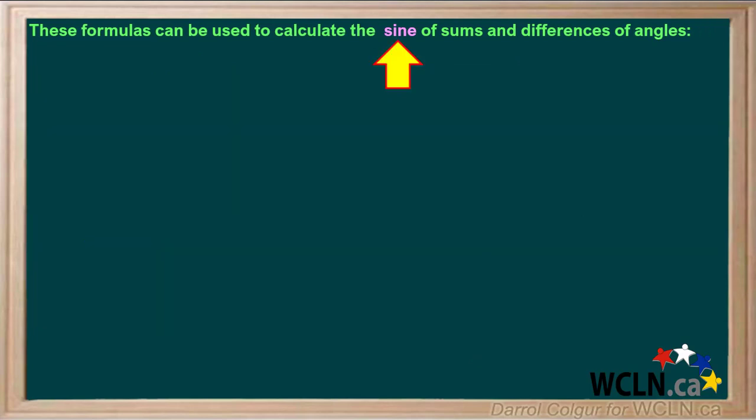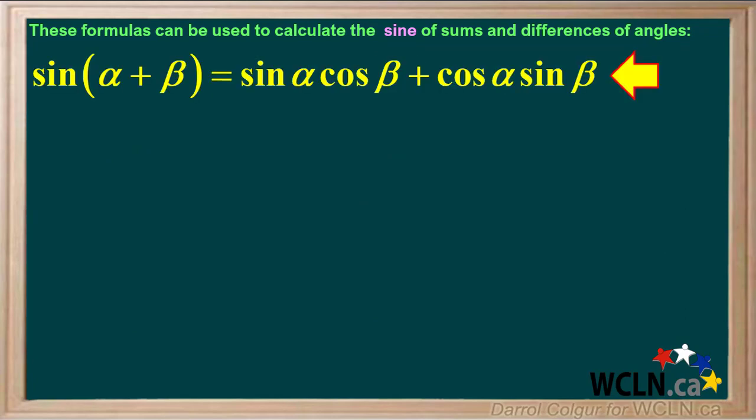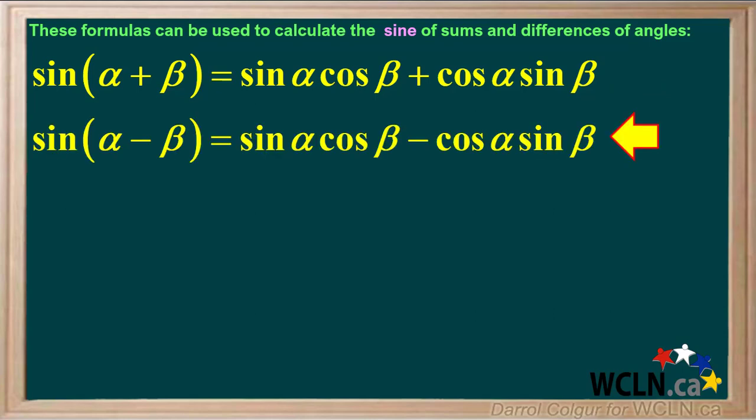The following formulas can be used to calculate the sine of sums and differences of angles. If alpha and beta are two angles, sin(alpha + beta) equals sin alpha cos beta plus cos alpha sin beta, and sin(alpha - beta) equals sin alpha cos beta minus cos alpha sin beta.